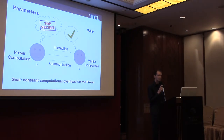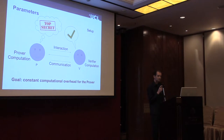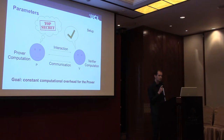You can measure the efficiency of zero-knowledge protocols relative to the size of the statement the prover wants to prove. We can measure the prover computation, the verifier computation, the amount of interaction, the size of the messages communicated, and the cost of setting up the protocol. In previous work, there aren't any examples of zero-knowledge proofs with only constant computational overhead for the prover — where the cost of proving is directly proportional to the cost of producing the proof. That's what we produce in this work.